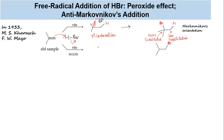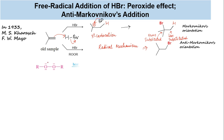Peroxides give rise to free radicals that initiate the addition, causing it to occur by a radical mechanism, which produces anti-Markovnikov's regioselectivity. The oxygen-oxygen bond in peroxides is rather weak, so it can break with slight input of energy, be it in the form of heat or light, to give two alkoxy radicals.